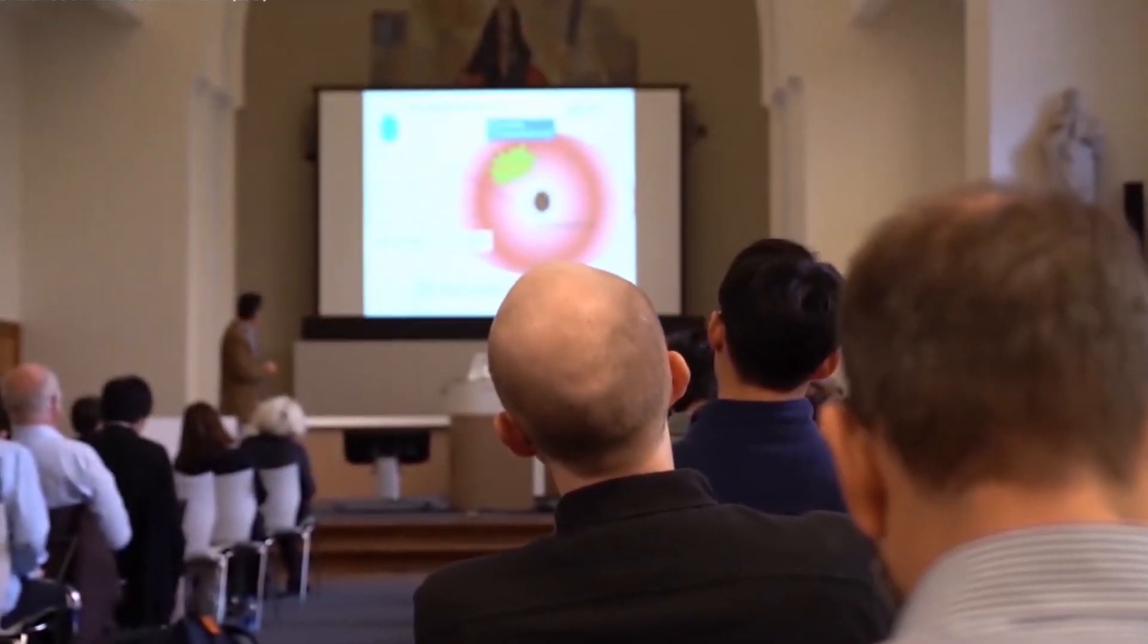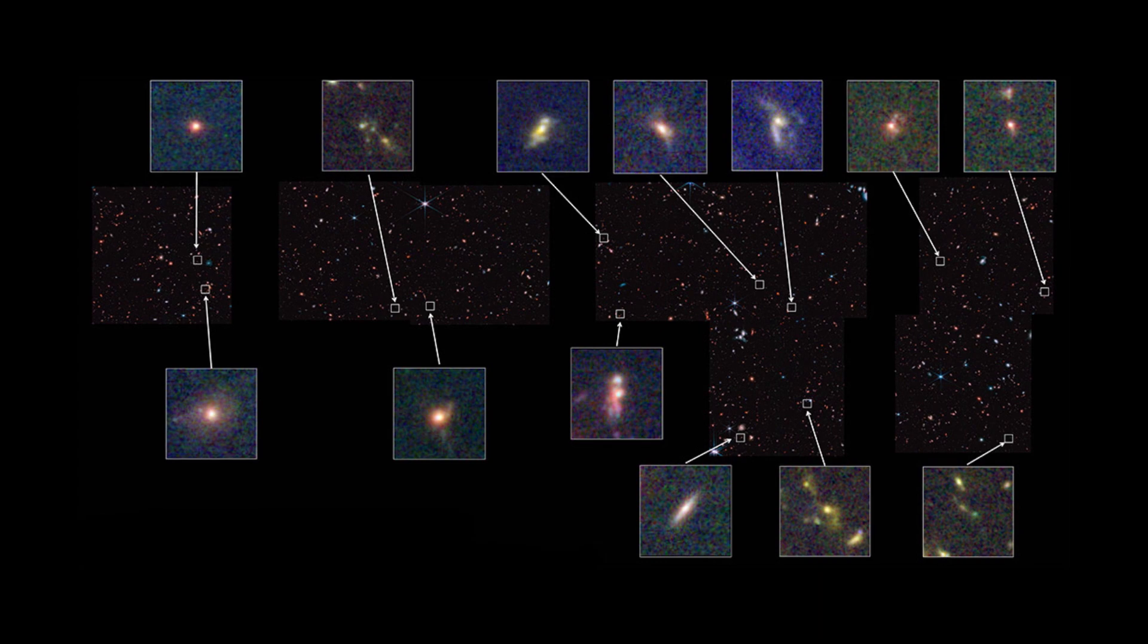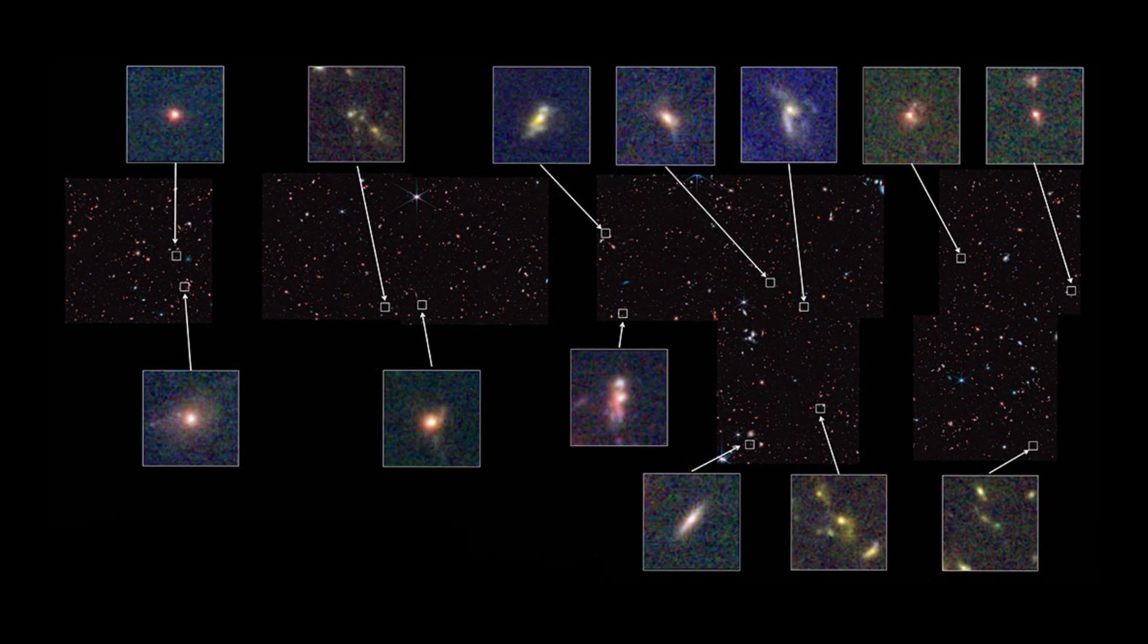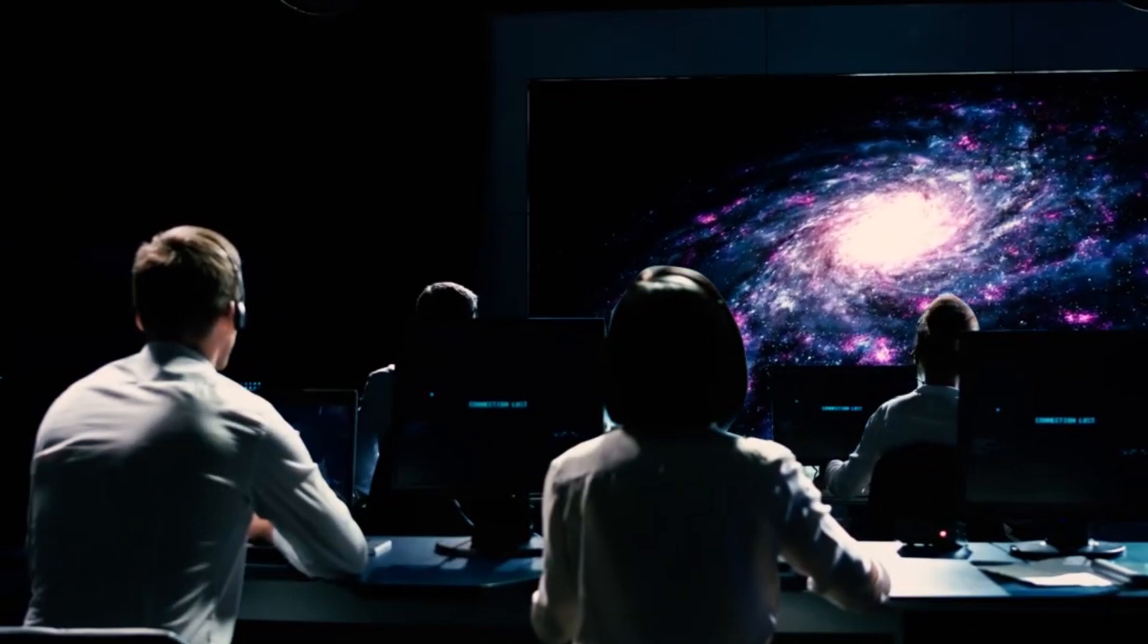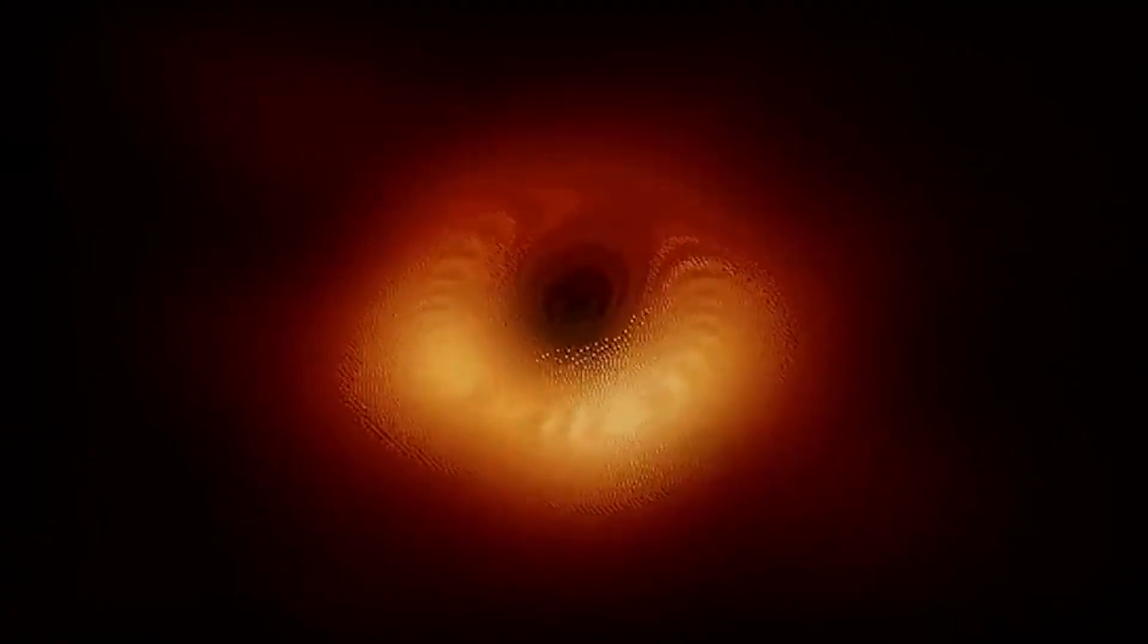In order to make this discovery, the CEERS program used Webb to merge images of the early universe taken in the near and mid-infrared with data taken at other light wavelengths. Researchers were quite surprised by looking at this distant object with Webb telescope as the results were quite similar to the data from black holes found in galaxies near our own.